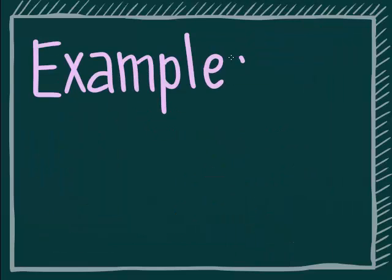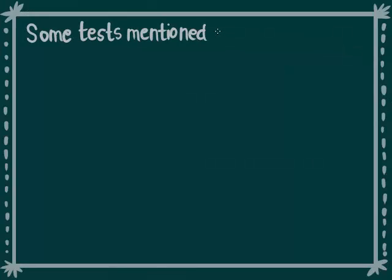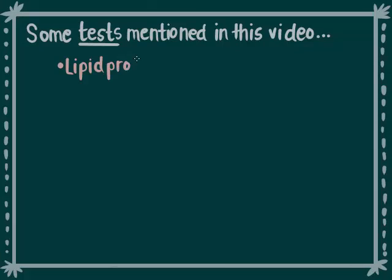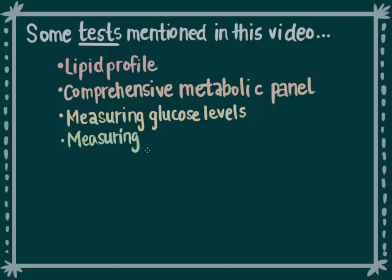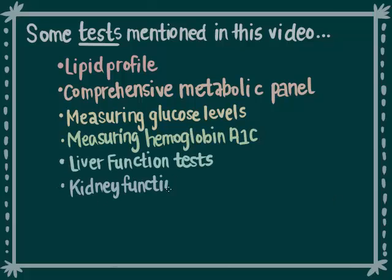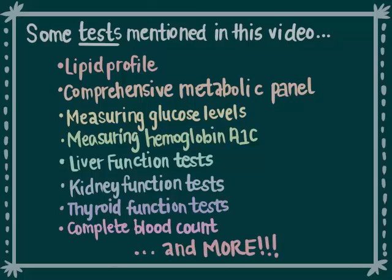The following slides show examples of some of the common tests performed on blood samples. Some of the tests we will be going over include a lipid profile, a comprehensive metabolic panel, measuring glucose levels and hemoglobin A1C, liver function tests, kidney function tests, thyroid function tests, and complete blood count. You need to look at the whole picture, not just one of the tests.